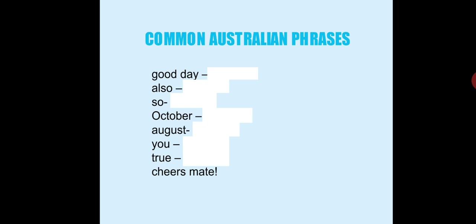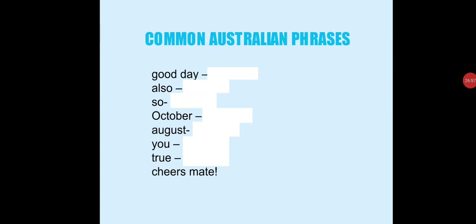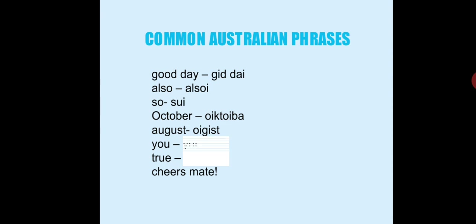Common Australian phrases: 'good day' sounds like 'g'die.' Instead of hearing 'good day,' you'll hear 'g'die.' So 'it's a good day to die, mate' — and that's how they say it. You have to be really aware of how the accent is pronounced. Also 'cheers, mate' sounds distinctly different from standard pronunciation.